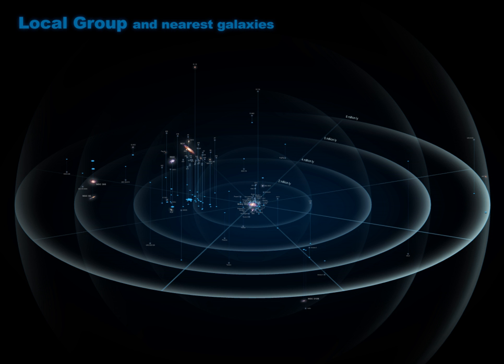are generally depleted in hydrogen gas compared to those that orbit more distantly. This is because of their interactions with the dense hot gas halo of the Milky Way that strips cold gas from the satellites. Satellites beyond that region still retain copious quantities of gas.